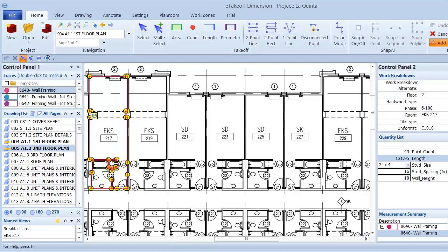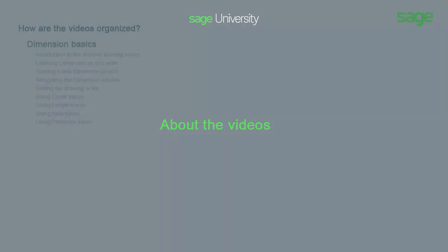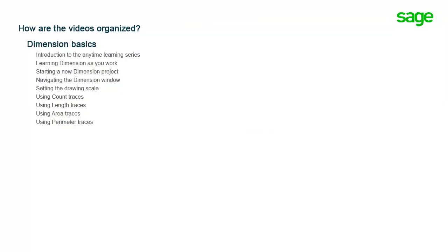By the time you complete this training package, you'll know how to do all of these things and more. The videos in this subscription are organized into four general categories. The first category, Dimension Basics, includes this overview, plus videos explaining some of the basic concepts and features of Dimension, such as creating a new project, getting around in the Dimension window, setting drawing scales, and using count and length traces.